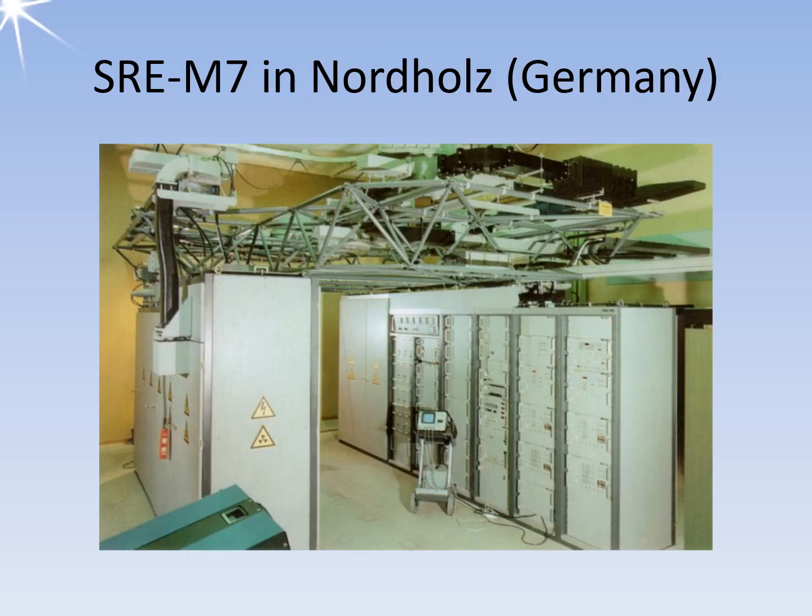The picture shows the radar electronic room of the SREM-7 enroute radar from Nordholtz, Germany — surveillance radar equipment, modernization level 7. The rack above the cabinets contains the waveguides for the high frequency and the duplexer. The cabinet on the left, with the high voltage and radiation protection symbols, houses the modulator and transmitter tube, a high power klystron.